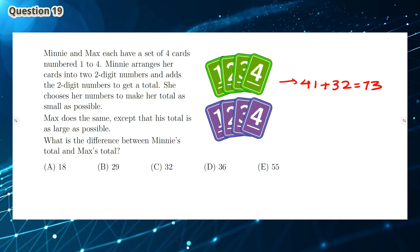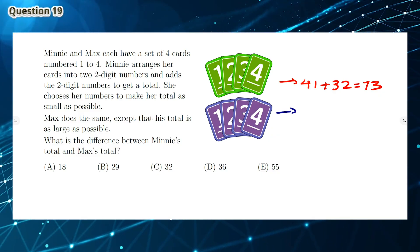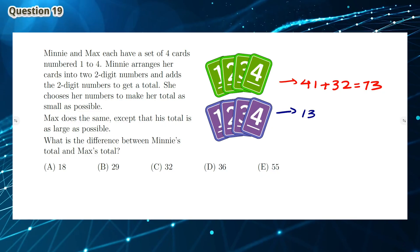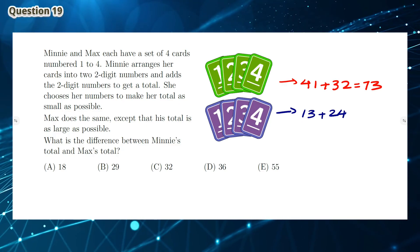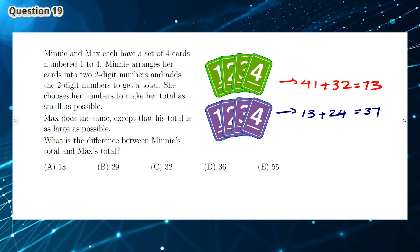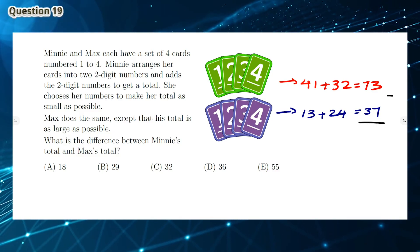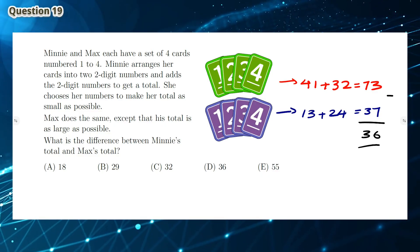So we add 13 and 24 where 1 and 2 are the smallest numbers out of these cards to get a sum of 37. The difference between these sums is 36, so the answer is D.